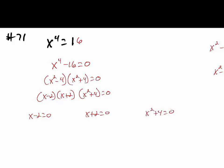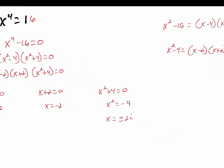Now I'll set each factor equal to zero. x minus 2 equals 0 gives x equals 2. x plus 2 equals 0 gives x equals negative 2. And x squared plus 4 equals 0 gives x squared equals negative 4, which means x equals plus or minus 2i. So the solution set is negative 2, negative 2i, positive 2, and positive 2i.